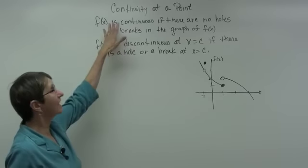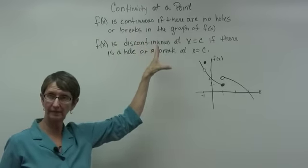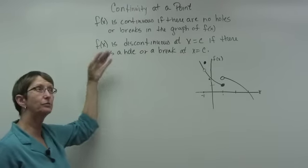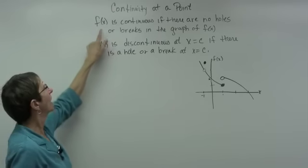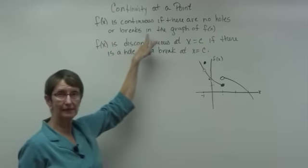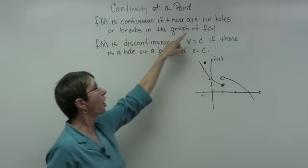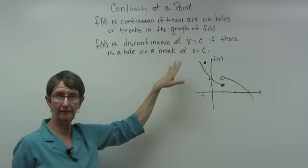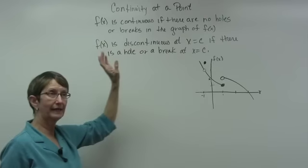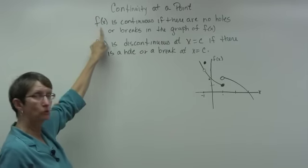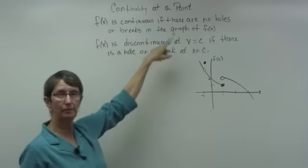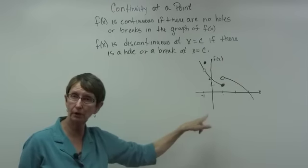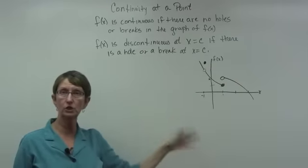Now we're going to look at continuity at a point. We've already seen limits at a point, and this is related but different. A function f is continuous if there are no holes or breaks in the graph of f of x. So we can follow a graph left to right, moving all along it with your pen or finger, and you never have to lift it up to go over a hole or a jump or a break.